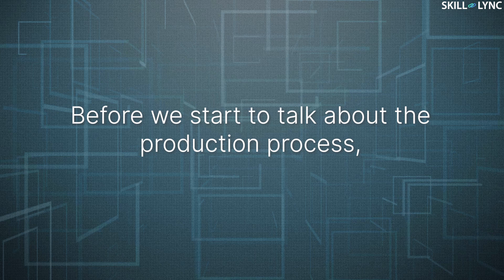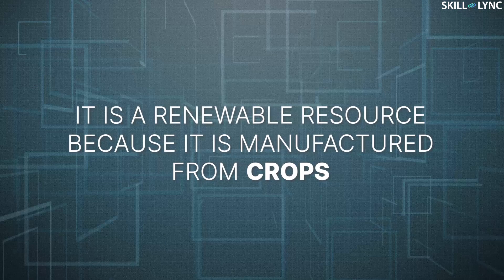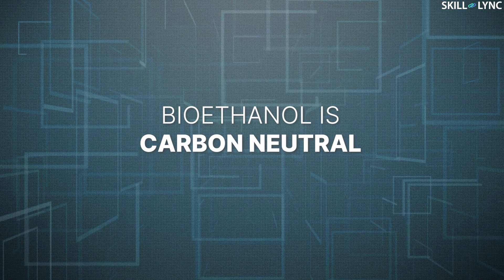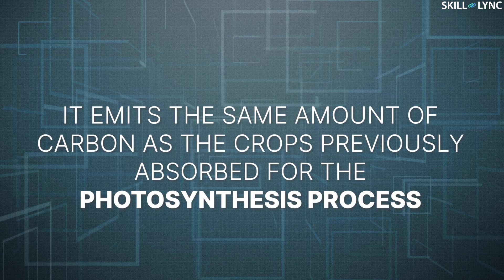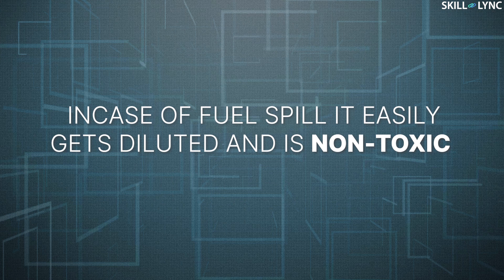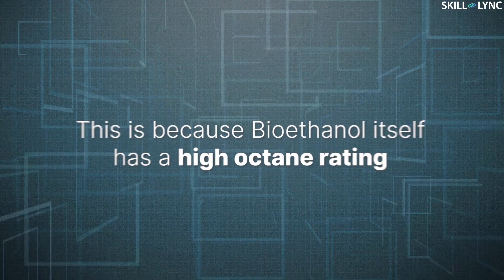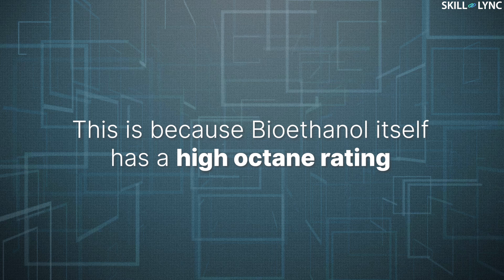Before we start to talk about the production process, let's talk about the benefits of bioethanol. First up, it's a renewable resource because it is manufactured from crops. Bioethanol is considered carbon neutral — this means it emits the same amount of carbon as the crops previously absorbed for the photosynthesis process. On combustion, bioethanol emits a lesser amount of greenhouse gases, and in case of fuel spill, it easily gets diluted and is non-toxic. In bioethanol fuel, high octane additives are reduced or even avoided, because bioethanol itself has a high octane rating.